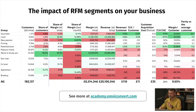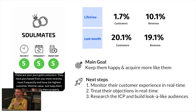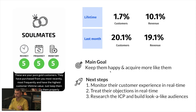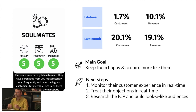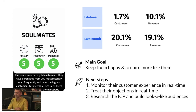It's important to understand how to treat each customer group differently. For Soulmates — 1.7% of total lifetime customers generating 10% of total revenue, and a fifth of last month's customers generating 19% of revenue — the main goal is to keep them happy, not lose them, and acquire more like them. Next steps: monitor their customer experience in real time, treat their objections in real time, research them as your ideal customer profiles, and build lookalike audiences based on them.